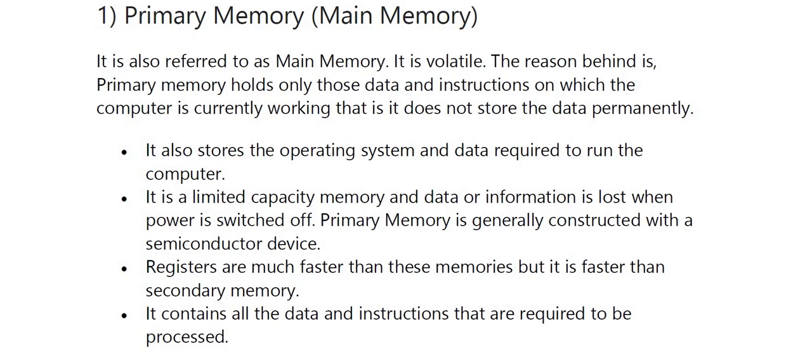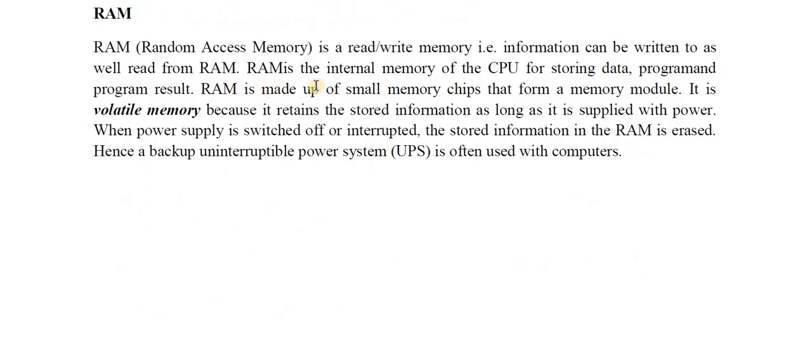The first type of main memory is RAM — Random Access Memory. RAM stores the currently running processes. For example, if you want to print a document from your pen drive, you insert the pen drive into your computer and instruct the computer to print. That process is stored in RAM. RAM is a read/write memory, meaning information can be written to as well as read from it. RAM is the internal memory of the CPU for storing data and is made up of small memory chips that form a memory module.